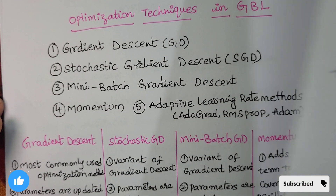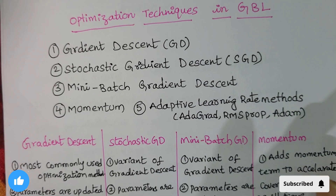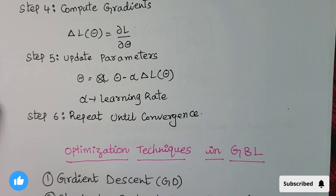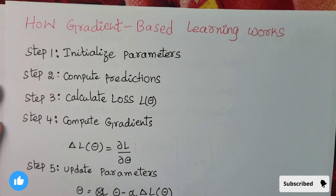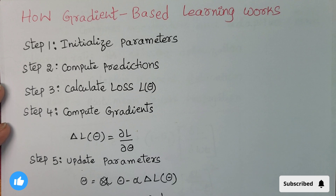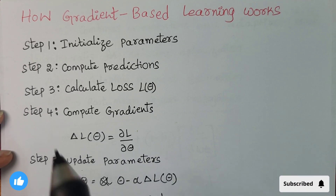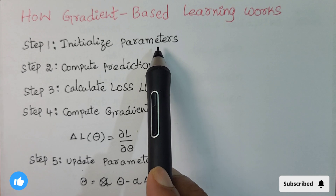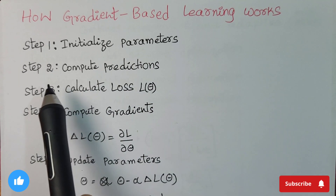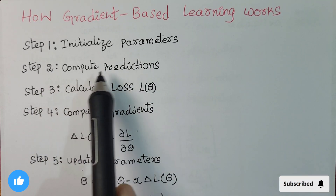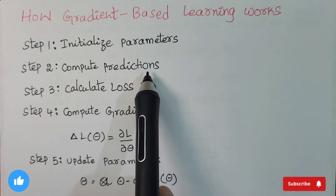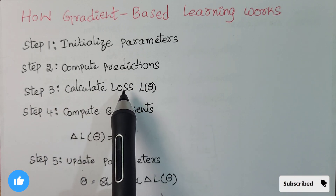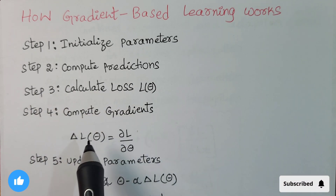Now let's look at how gradient-based learning works. In the first step, we initialize the parameters. In the second step, we compute the predictions. In the third step, we calculate the loss — L(θ).